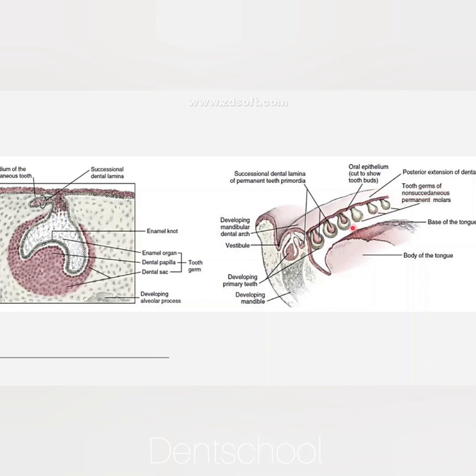So we have three processes: the main dental lamina, the lingual process, and the distal process. The vestibular lamina subsequently hollows out and forms the oral vestibule between the alveolar portion of the jaws and the lips and cheeks.